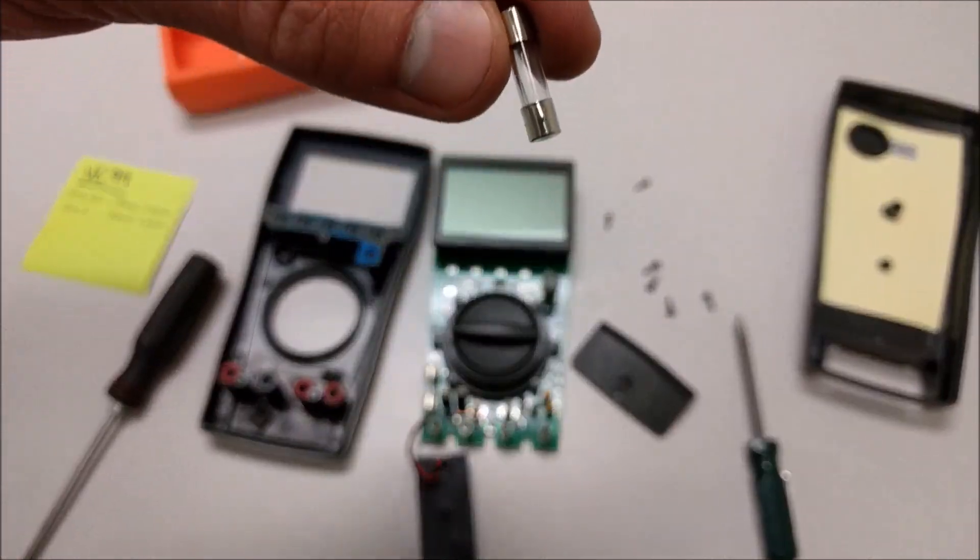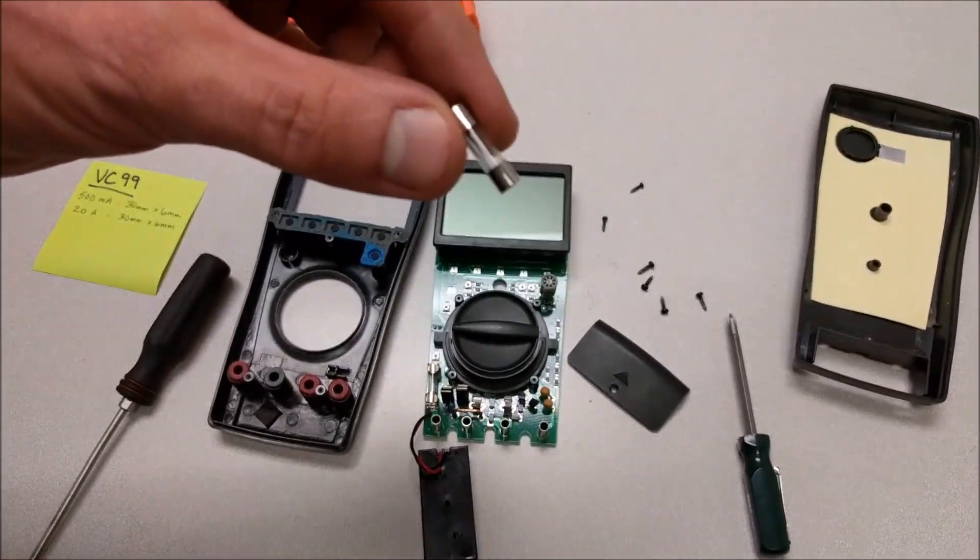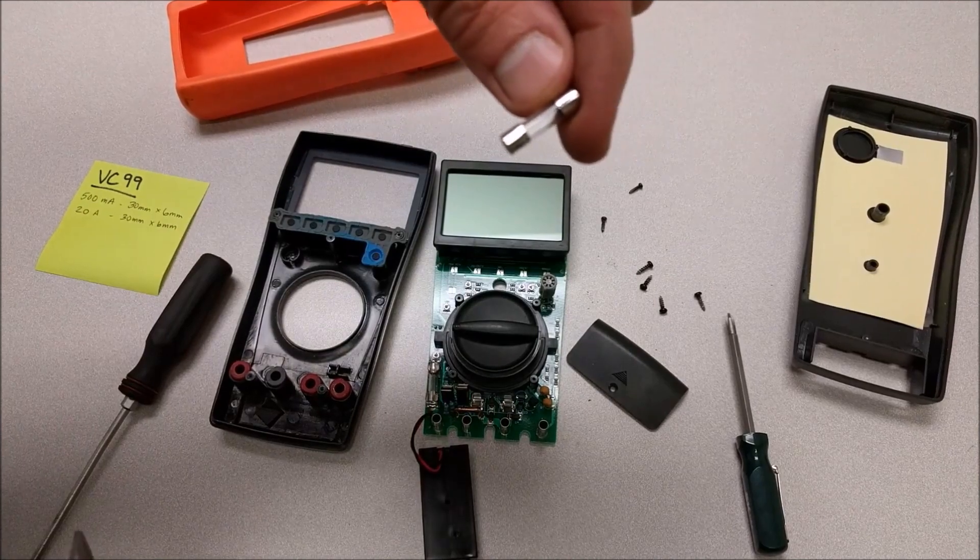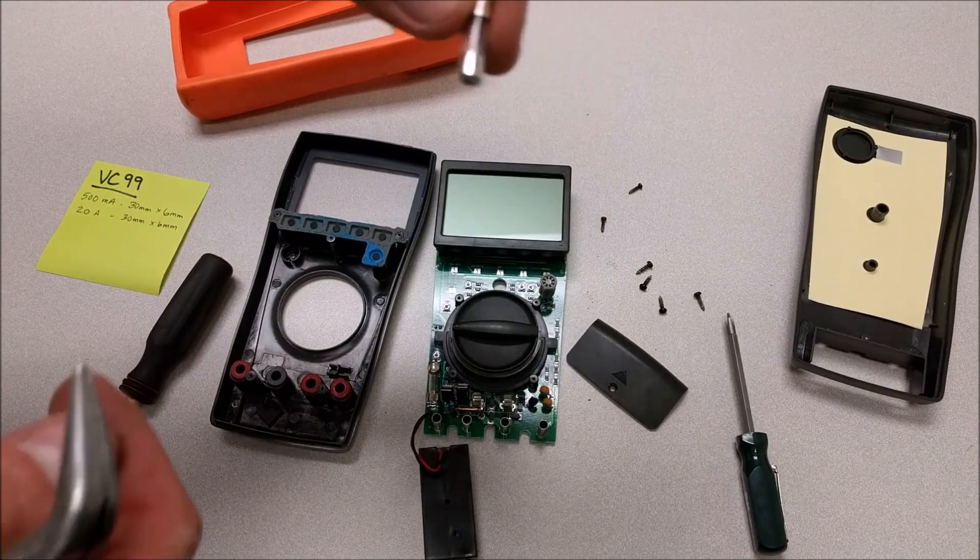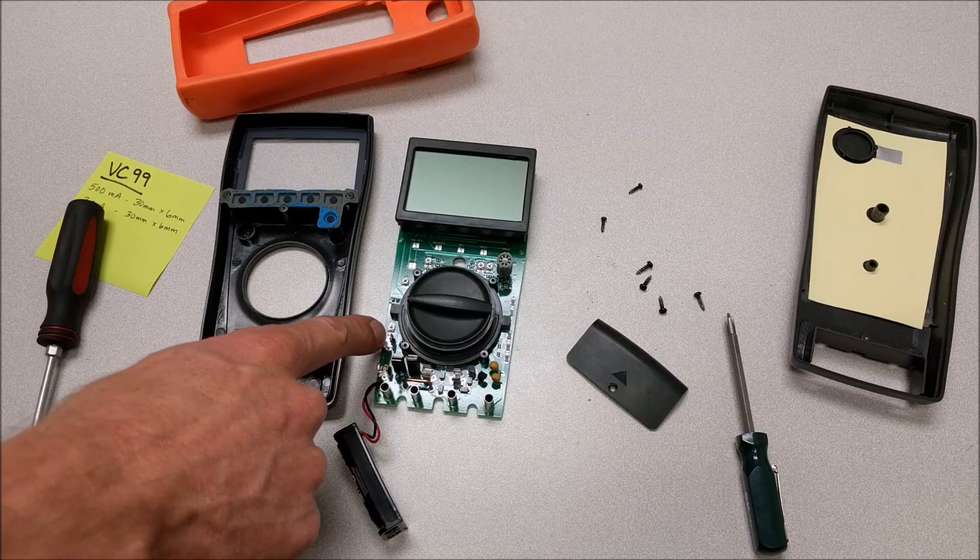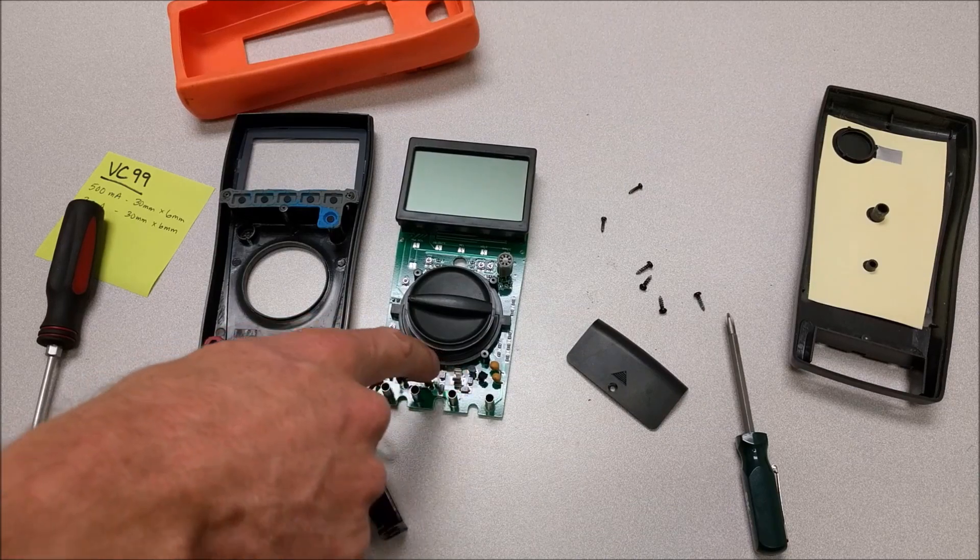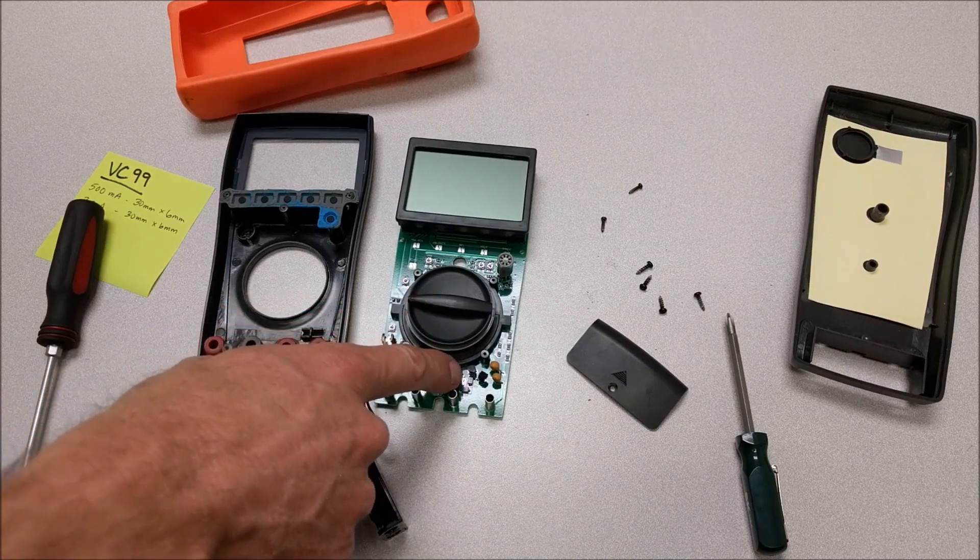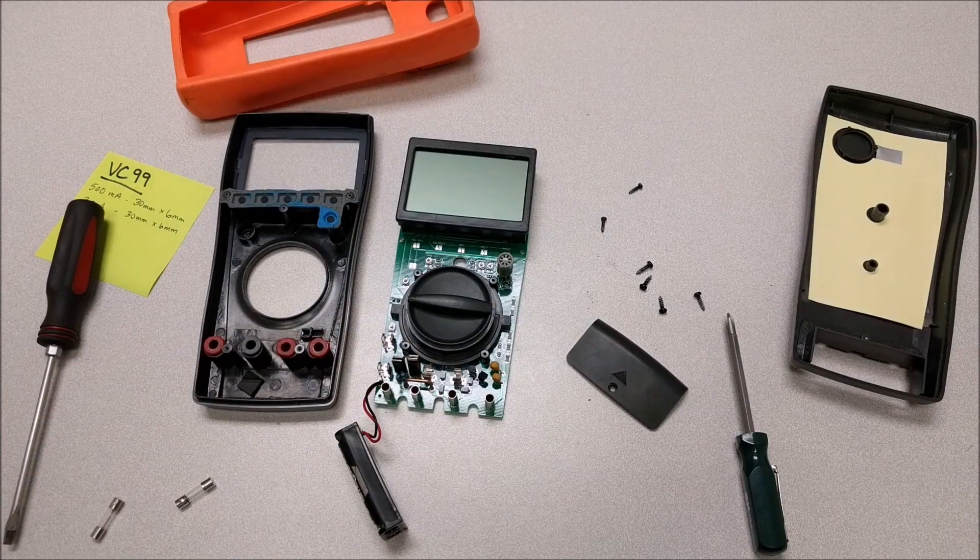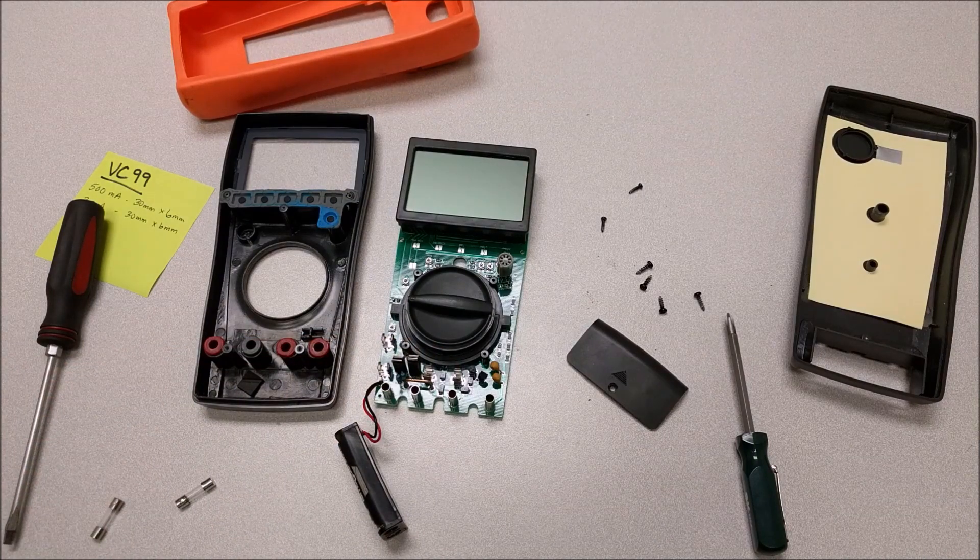Now because these fuses are the same size, you'll need to pay extra attention in this meter to make sure that we get the right fuse in the right position. This fuse is the 20 amp fuse and the fuse right here underneath the switch is the 500 milliamp fuse. So just make sure you don't confuse those and mix those up.